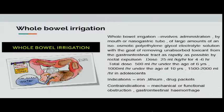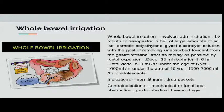Whole bowel irrigation is another form of decontamination, involving administration by mouth or nasogastric tube of large amounts of solution to remove unabsorbed toxicant from the GI tract. The dose is 25 mL/kg/hour for 4 to 6 hours, with a total of 500 mL/hour under age six, 1,000 mL/hour under age 10, and increased for adolescents. Indications include iron and lithium toxicity and drug packets. Contraindications include GI hemorrhage or mechanical or functional obstruction.